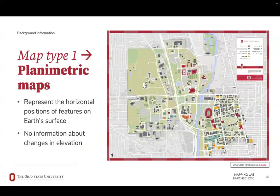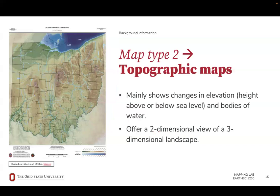The first type of map is probably the one that you're most familiar with. Planimetric maps are two-dimensional maps that represent the horizontal positions of features on Earth's surface. These maps don't provide any information about the shape of Earth's surface or changes in elevation. A topographic map is a type of map that shows elevation — these maps are a two-dimensional view of a three-dimensional landscape, used by people like hikers who need to know what the elevation of an area is.